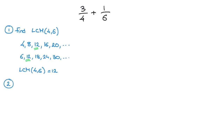Step 2: we need to write both of these fractions over the least common multiple that we found in step 1. In other words, we need to write both fractions over 12. So I'll just go ahead and say: write fractions over 12. Let's see how we do that.